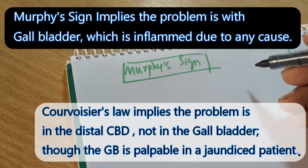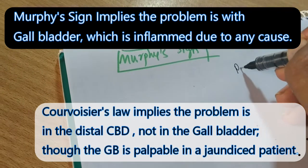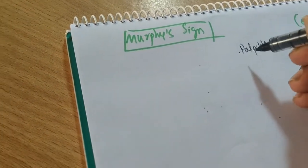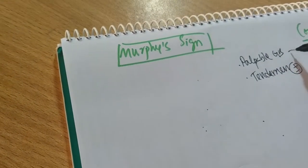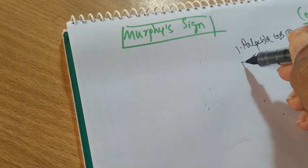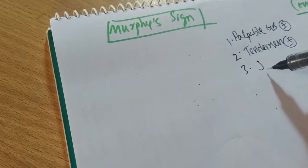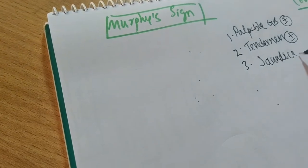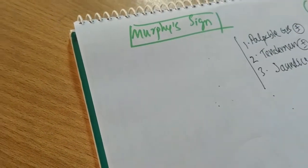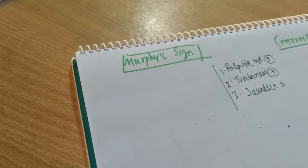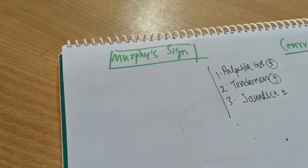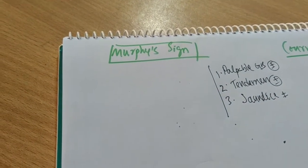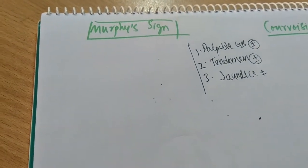When there is a question of a palpable gallbladder, number one: is the gallbladder palpable or not? Number two: is tenderness present in the right hypochondriac region or not? And number three: does the patient have jaundice or not? Murphy's Sign and Courvoisier's Law act on the presence or absence of these three points.